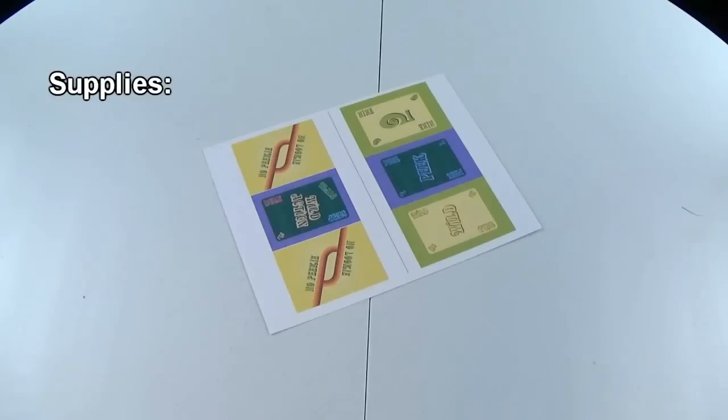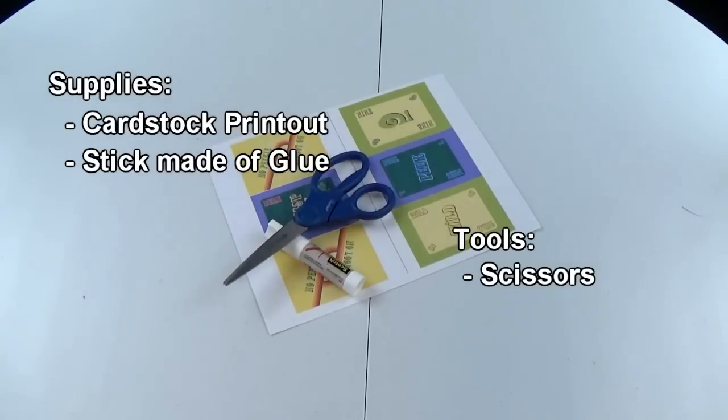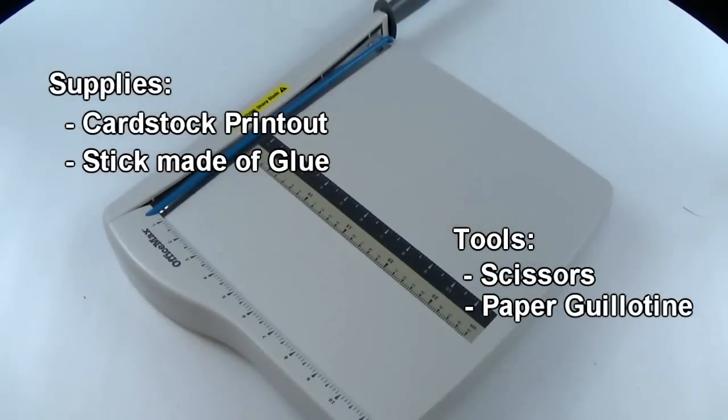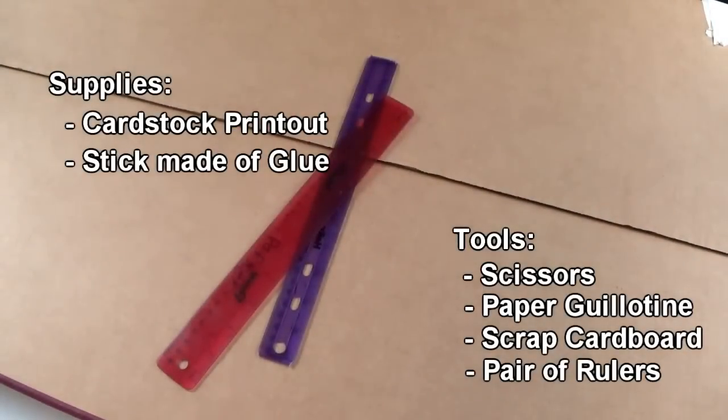For this self-registering prototype, you'll of course need the aforementioned card printouts, made on a heavy card stock, some glue stick, scissors, an optional card guillotine, and in lieu of a scoring kit, we're going to use some corrugated cardboard and a couple of rulers.